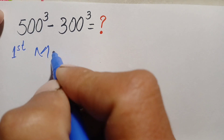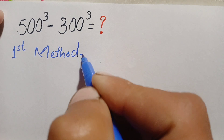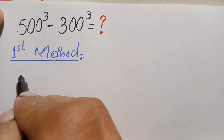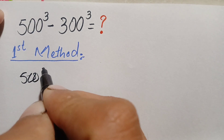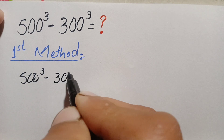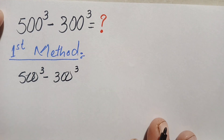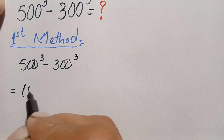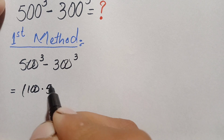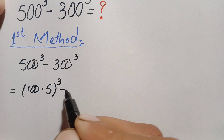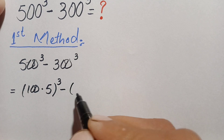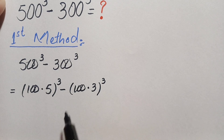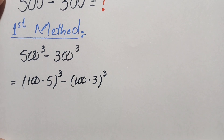First method. In the first method we will rewrite this problem: 500 cubed minus 300 cubed. Now we will factorize these two numbers. We can write 500 as 100 times 5, so (100×5) whole cubed, minus 300 as (100×3) whole cubed.